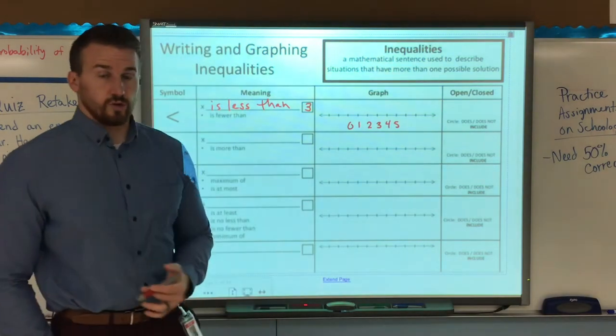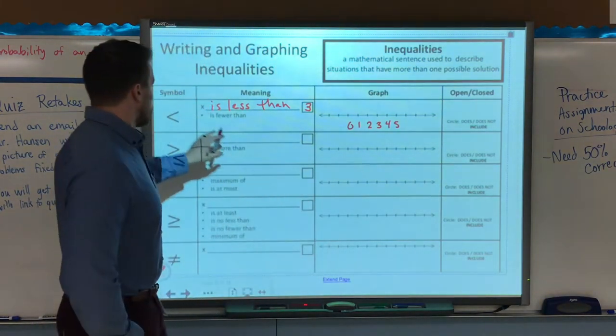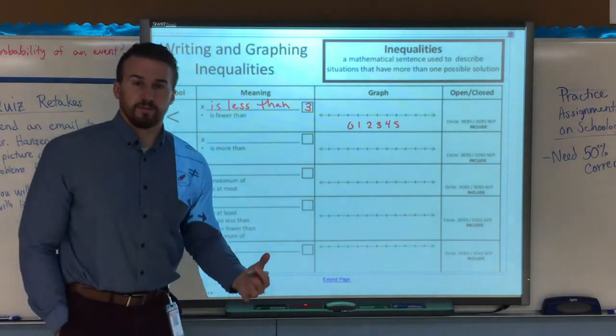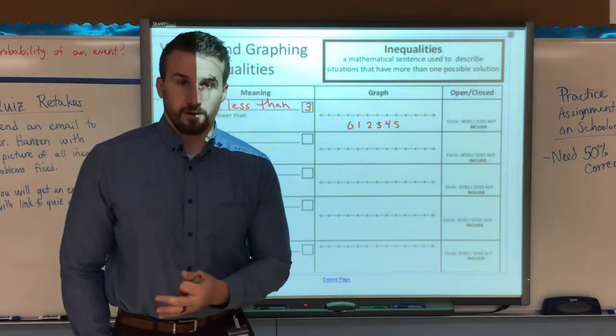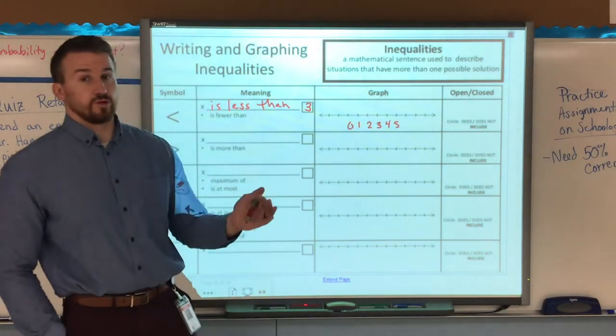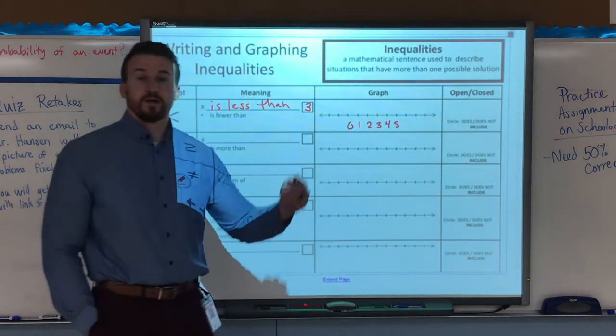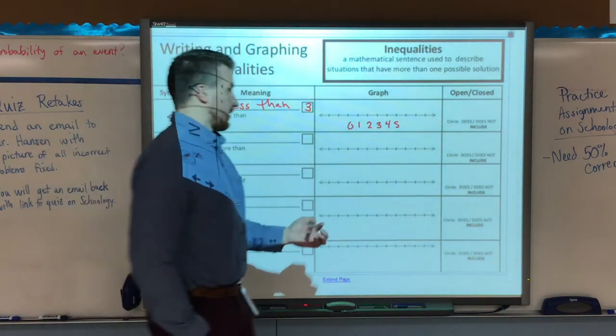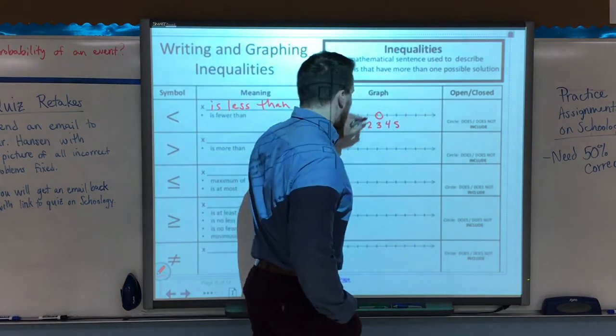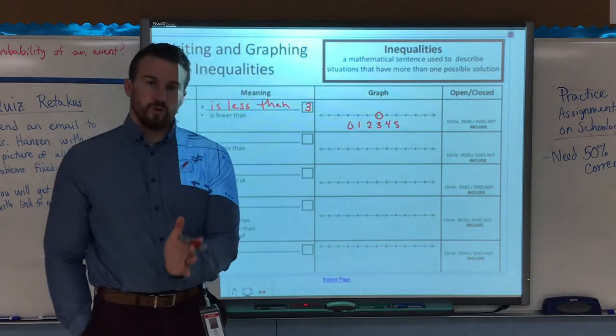I need to now graph this to show all the possible numbers that it could be. So if it's less than 3, what I'm saying is that x can be any number less than 3. So it could be 2, could be 1, could be 0, could go into the negatives, it doesn't matter what it is. But what it cannot be is 3 or greater.